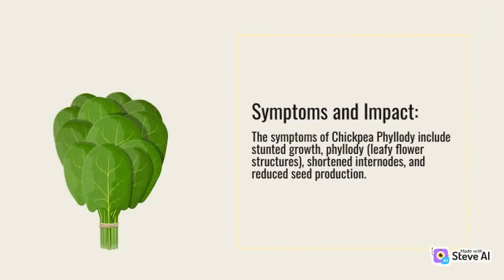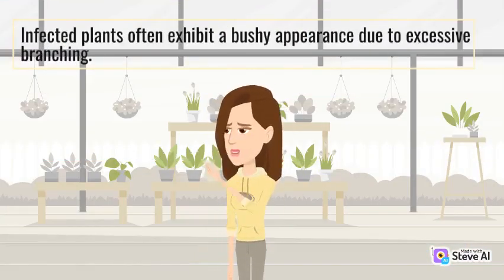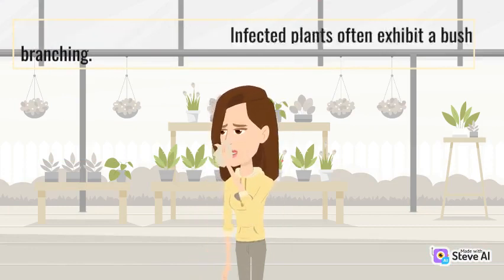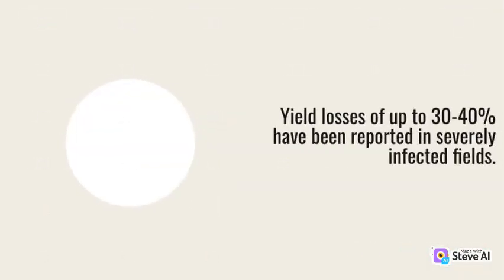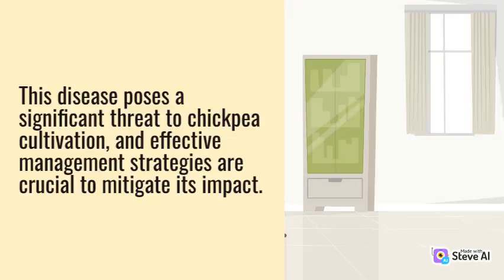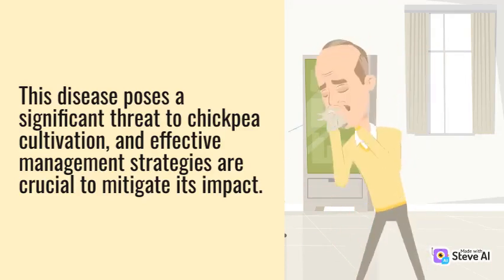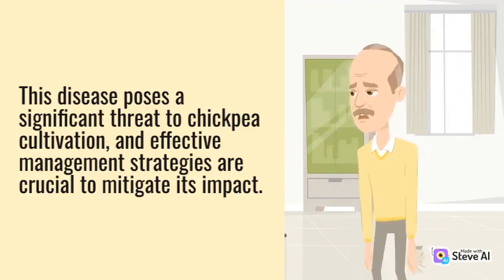Symptoms and Impact. The symptoms of chickpea phyllody include stunted growth, phyllody or leafy flower structures, shortened internodes, and reduced seed production. Infected plants often exhibit a bushy appearance due to excessive branching. Yield losses of up to 30 to 40 percent have been reported in severely infected fields. This disease poses a significant threat to chickpea cultivation, and effective management strategies are crucial to mitigate its impact.